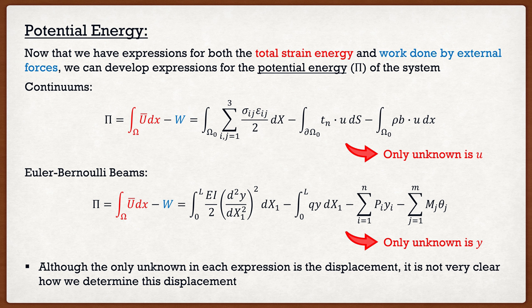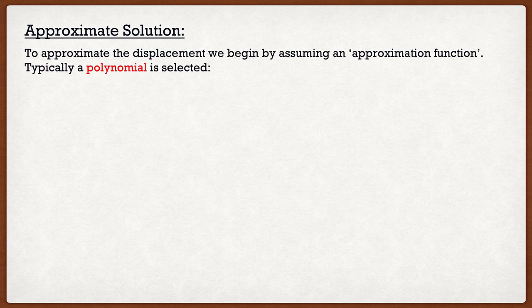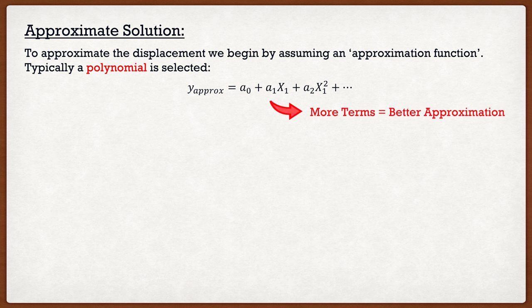Although we have one equation with one unknown, it's still not very clear how we solve for these unknowns. This is when we get into approximating things. The first step is to define an approximation function — typically, we select a polynomial. For an Euler-Bernoulli beam, we can say that our approximate displacement function is going to be a₀ plus a₁·x₁ plus a₂·x₁² plus etc. We can add as many terms as we want — the more terms, the better the approximation. The only unknowns in my approximation solution are those a coefficients, which is the whole goal of the Rayleigh-Ritz method.